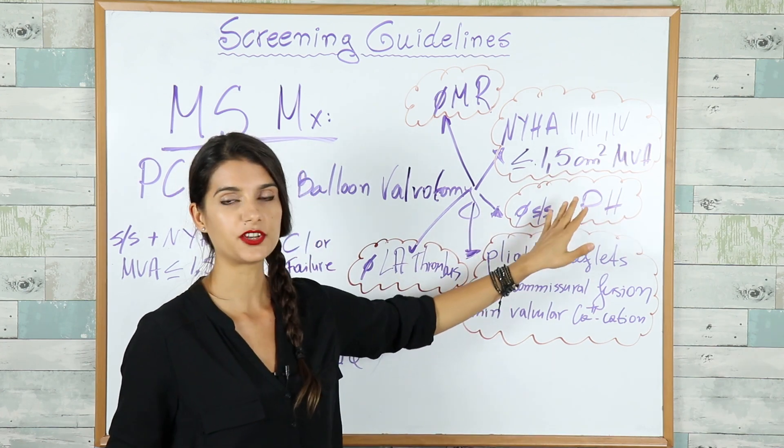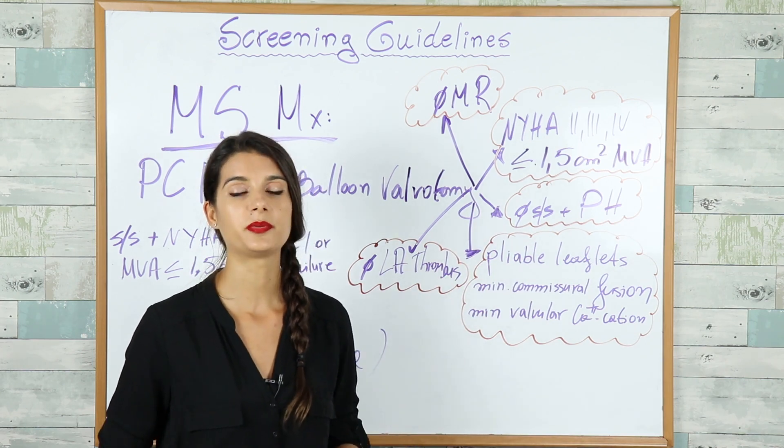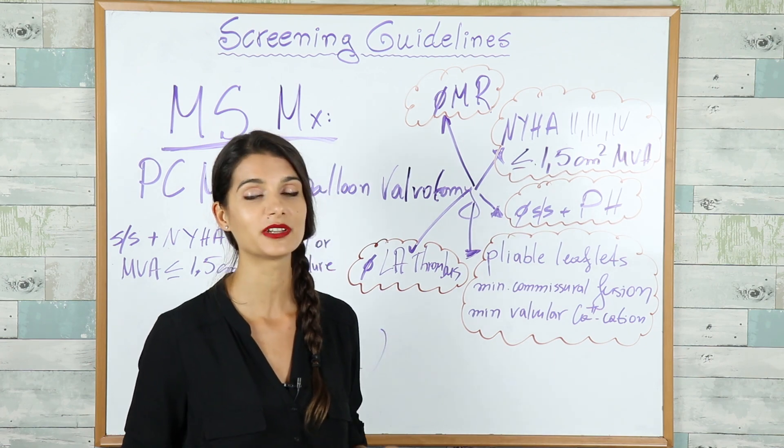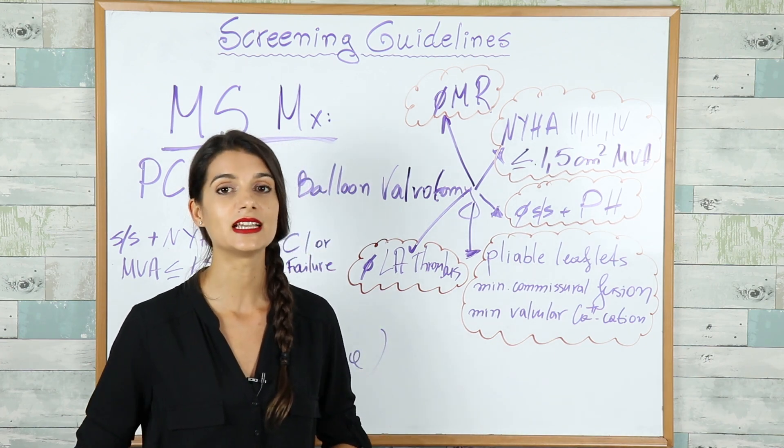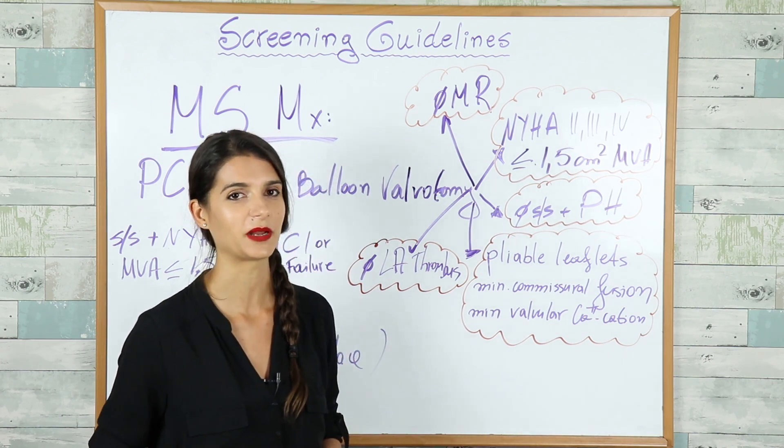If they're asymptomatic, they should have pulmonary hypertension. The normal pulmonary artery pressure is 8 to 20 millimeters of mercury, so pulmonary hypertension is defined as pulmonary artery pressure more than 25 millimeters of mercury.